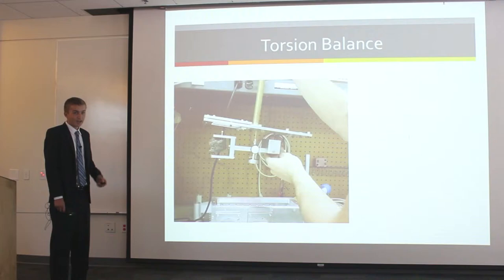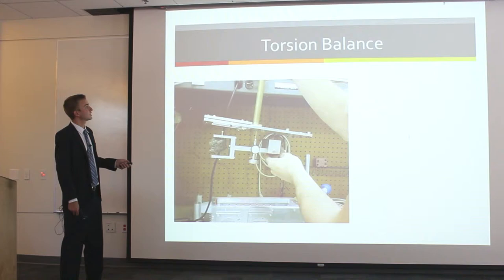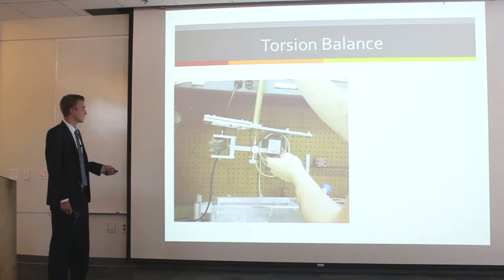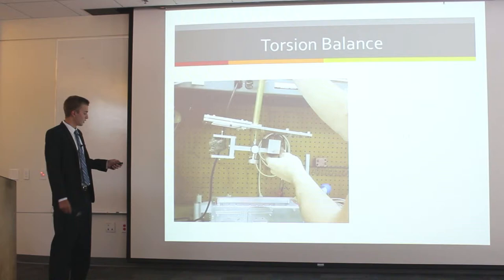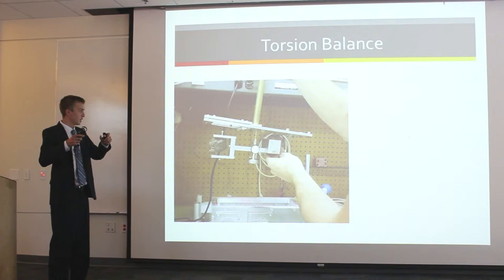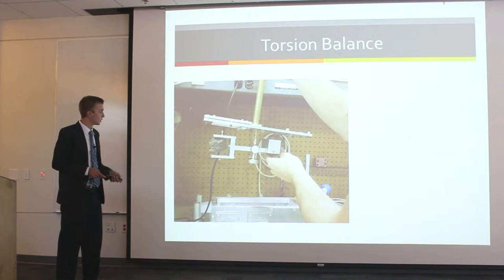I didn't get the chance to work on relativistic propulsion, but I did get to learn something even more awesome — the torsion balance. The torsion balance has a counterweight and a sample on a torsion bar, hung from a torsion fiber. This gives us a degree of freedom allowing it to rotate in one direction.